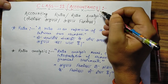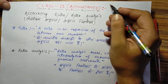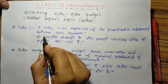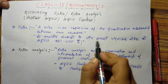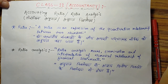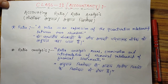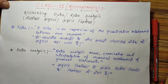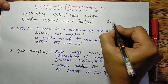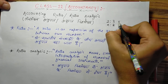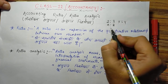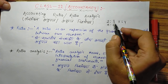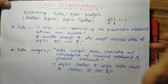When two numbers have a quantitative relationship between them, the relation is called a ratio. For example, 2 is to 3, A is to B, X is to Y — these are all quantitative numbers. Telling the relation between quantitative numbers is what we call a ratio.